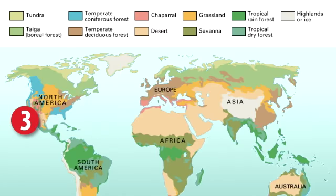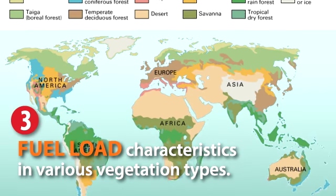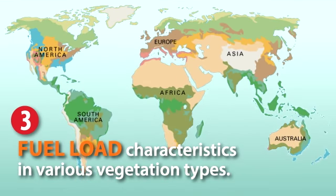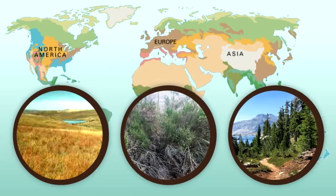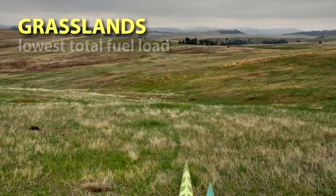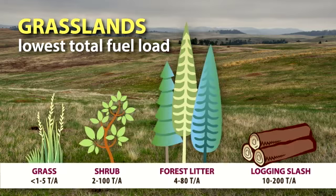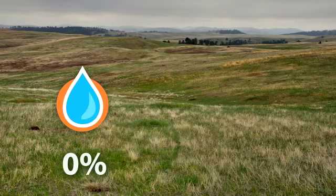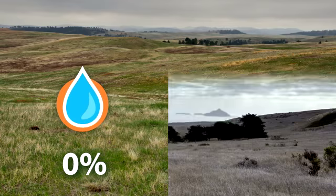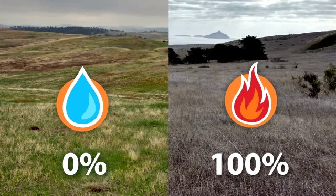The fuel load characteristics in various vegetation types is a very complex topic that is not easily generalized. Broadly speaking, we can present some general figures of fuel loading for the three most common vegetation types: grasslands, shrublands, and forests. Grasslands have the lowest total fuel load, typically no more than a few tons per acre and often less than a ton. Available fuel load can range from essentially zero in green, uncured grasses to an amount equal to the total fuel load in dried grasses.